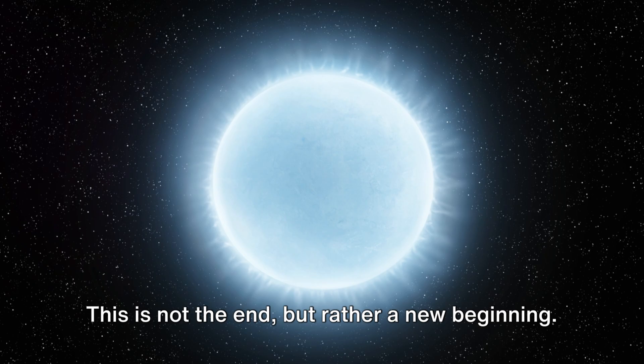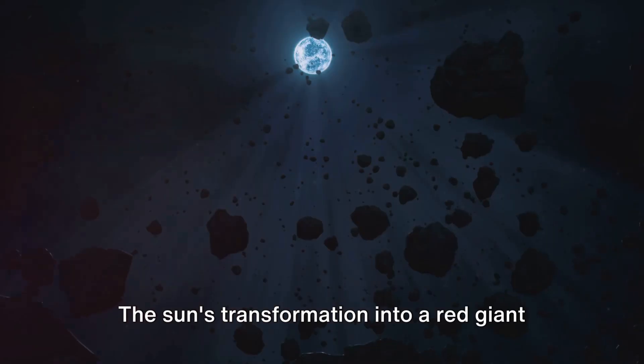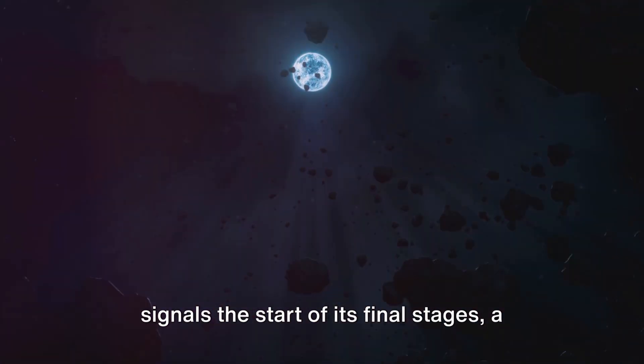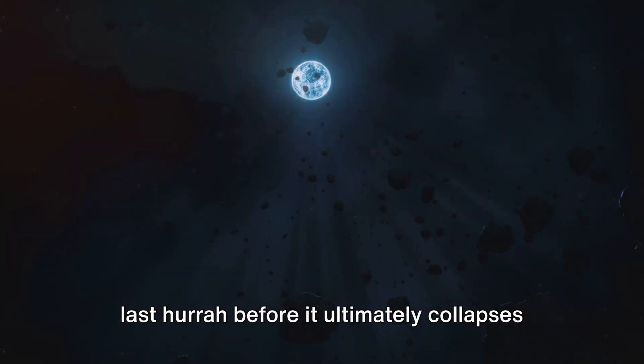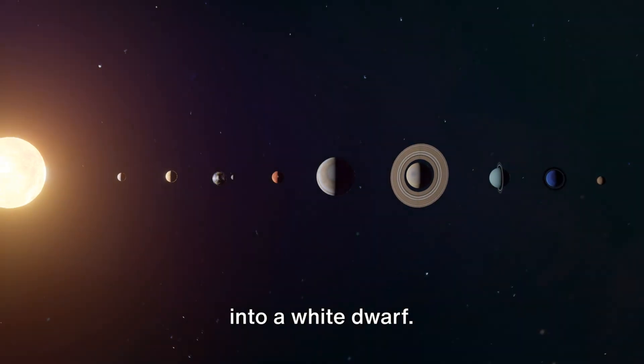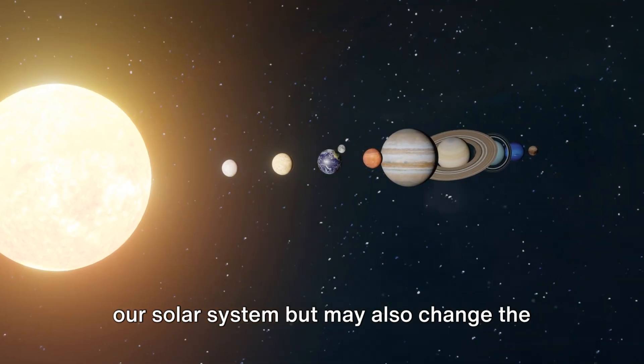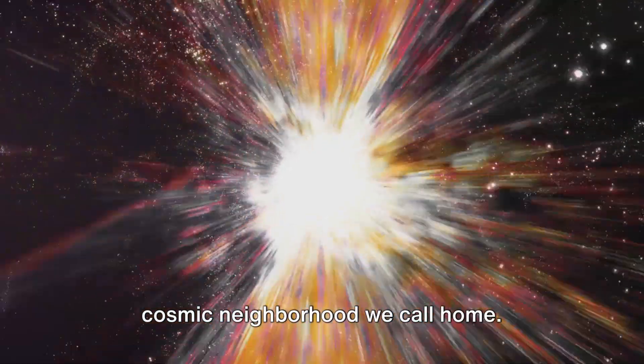This is not the end, but rather a new beginning. The sun's transformation into a red giant signals the start of its final stages. A last hurrah before it ultimately collapses into a white dwarf. This transformation will not only affect our solar system, but may also change the cosmic neighborhood we call home.